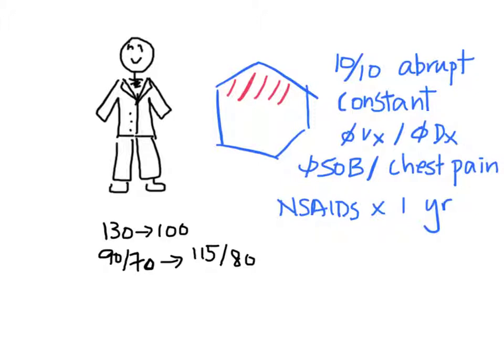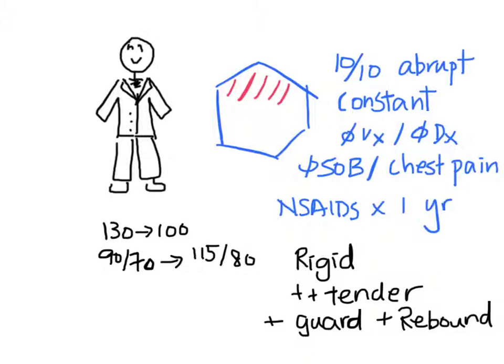When you examine his abdomen, you see that his abdomen is rigid and he does not want to move. There is severe tenderness all throughout his abdomen. There is involuntary guarding and rebound tenderness throughout his abdomen as well. The bowel sounds are decreased.